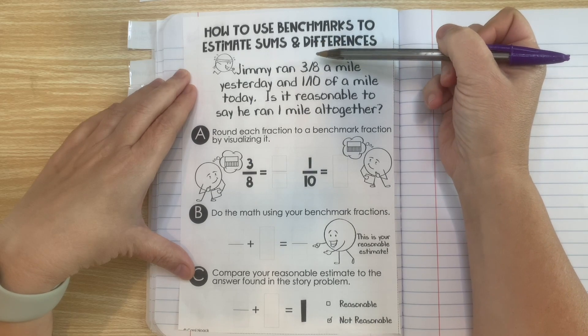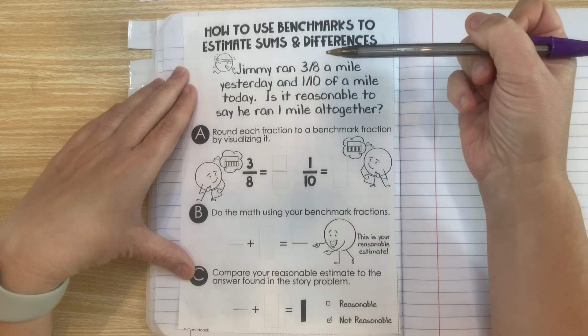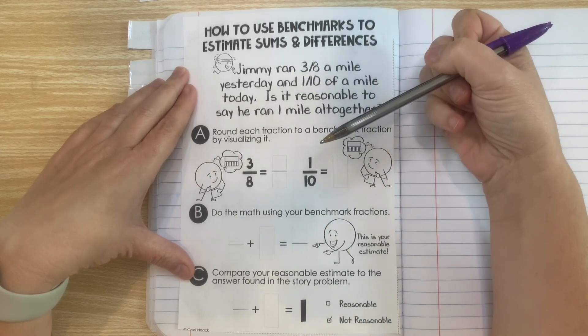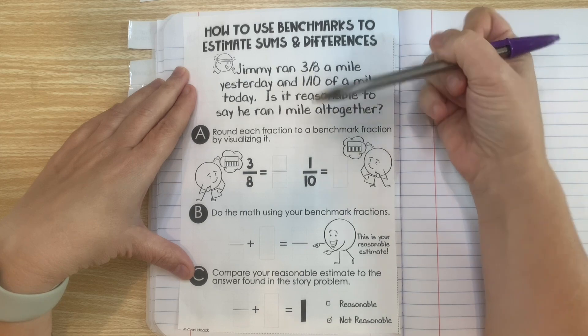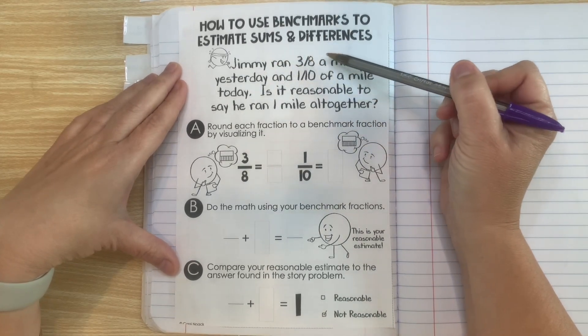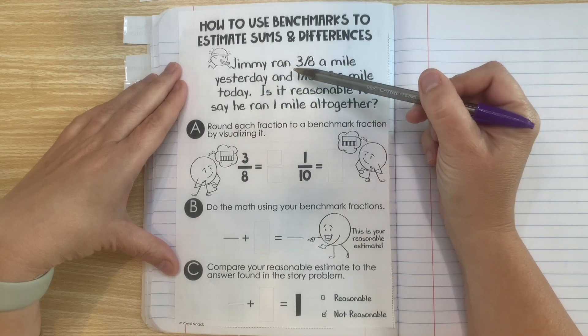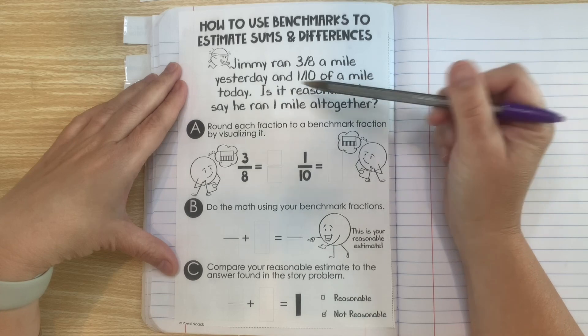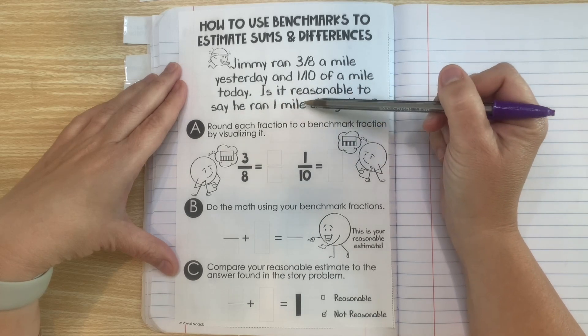So in real life, it doesn't always matter that you get the answer exactly right. You might just want to know about how much something is. So let's look at this math problem. It says, Jimmy ran three-eighths a mile yesterday and one-tenth of a mile today. Is it reasonable to say that he ran one mile altogether?